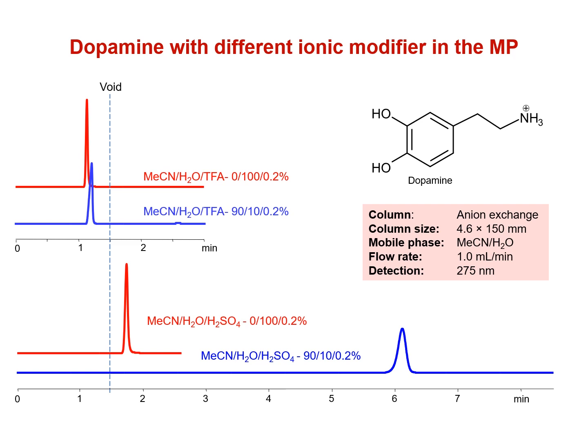We also noticed that the relative concentrations of the organic and aqueous components of the mobile phase significantly affected this new retention behavior when the ionic modifier was H2SO4. When the acetonitrile content was at near maximum capacity, dopamine retention increased by more than three times. With the single charge TFA buffer, there was almost no change in the retention time and the dopamine eluted pre-void regardless of the relative concentrations.